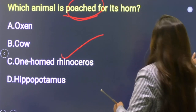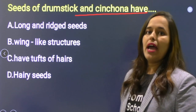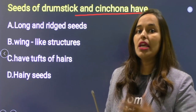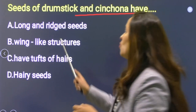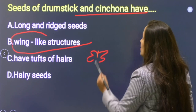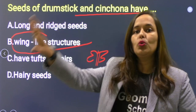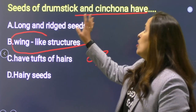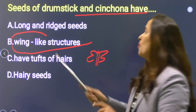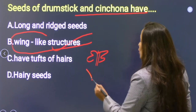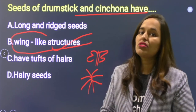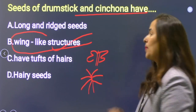Next: Seeds of drumstick and cinchona have — what structure? Seed dispersal chapter से — ये seeds wind के साथ कैसे उड़ते हैं। इनके पास wind/wing-like light structure होती है जो wind के साथ easily उड़कर दूर तक चले जाते हैं और germinate हो जाते हैं। Option B is correct — wing-light structure.